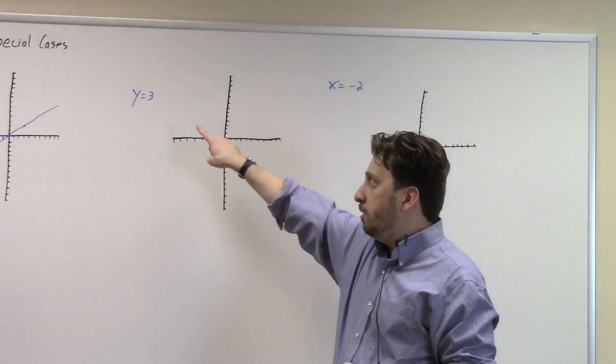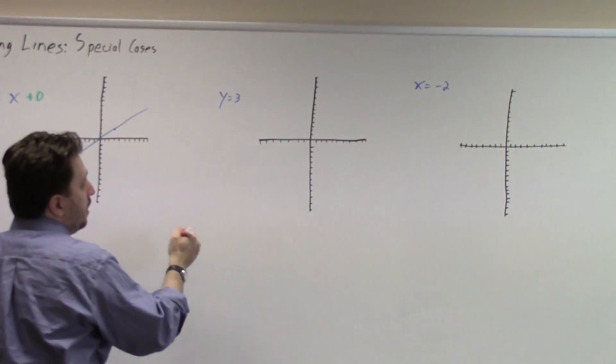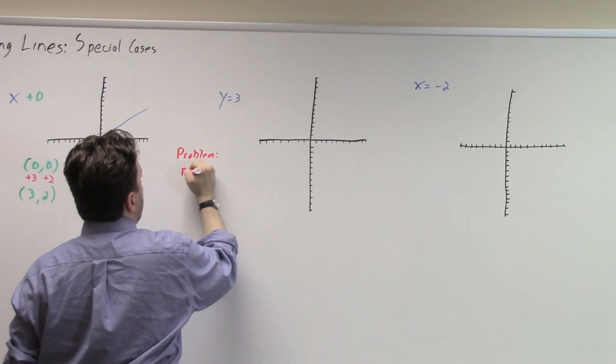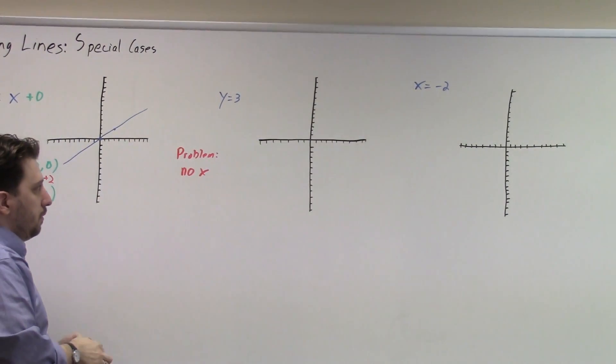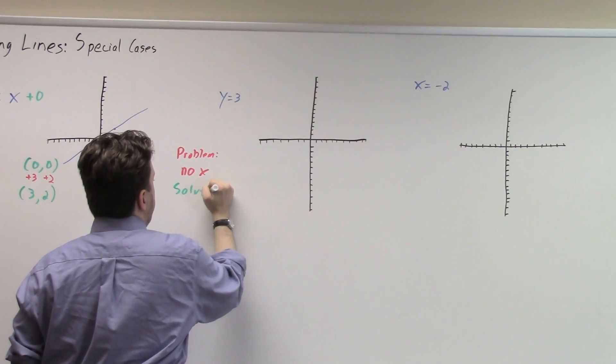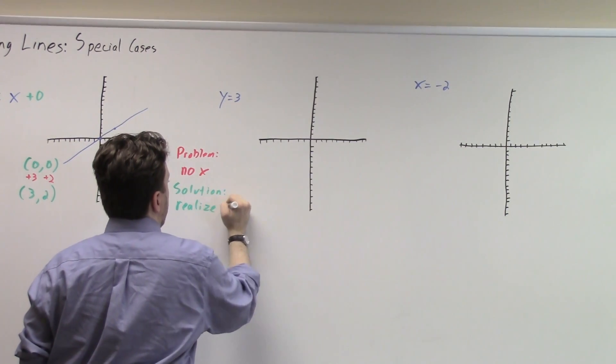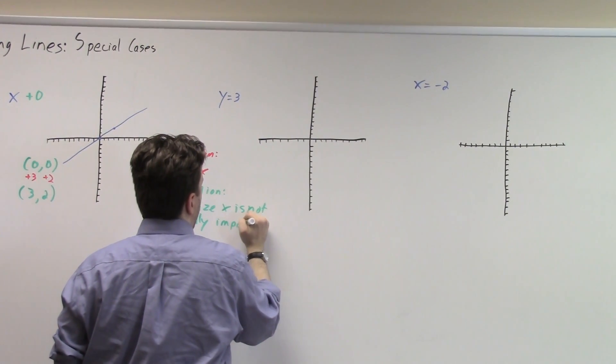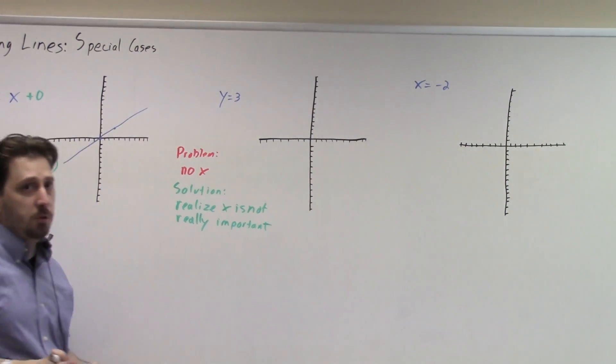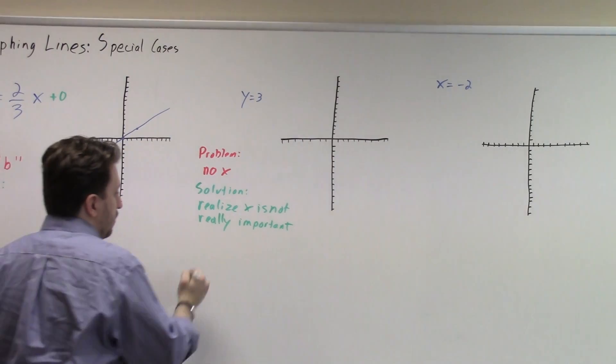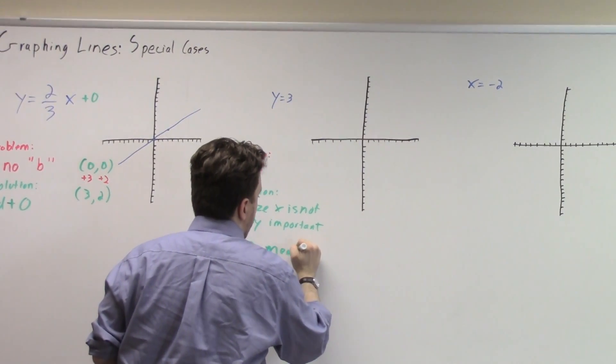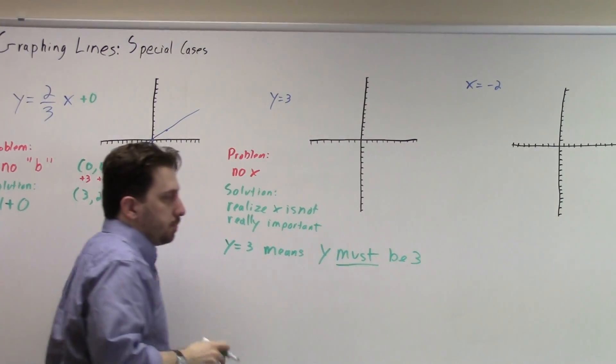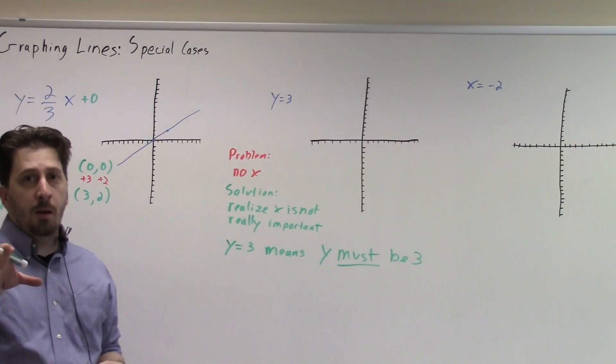We're going to look at this one first. In this case, the problem here is we just have y. We have y equals three, which means there is no x. And really, our solution here is to realize x is not really important here. In fact, it doesn't really matter what x is. What this is saying to us is that since we have y equals three, the y must be three.